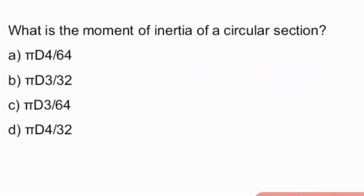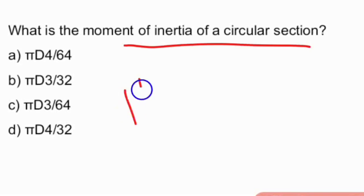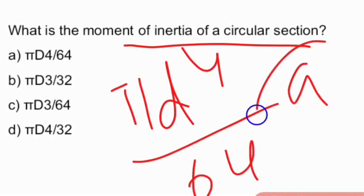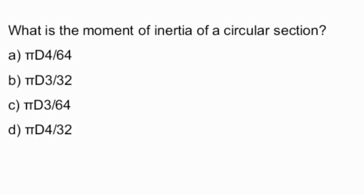What is the moment of inertia of a circular section? The answer is πD⁴/64 — option A is the right answer. These are the questions very much important for management trainee civil as well as E&M and civil sub-overseer trainee. Thank you.